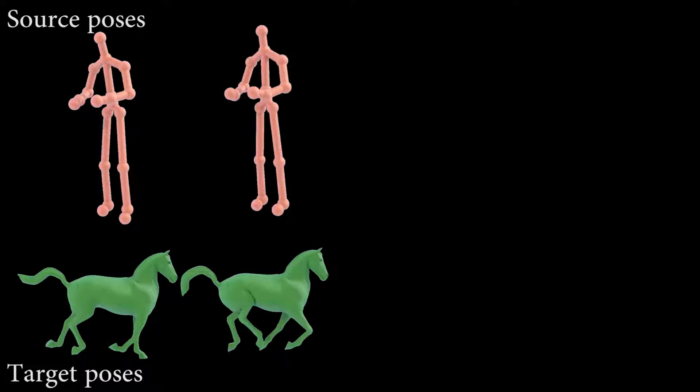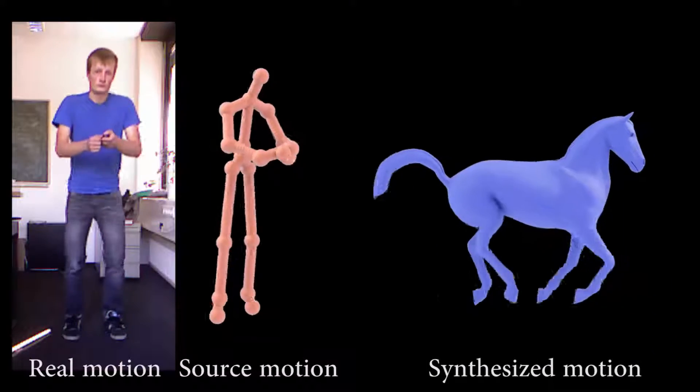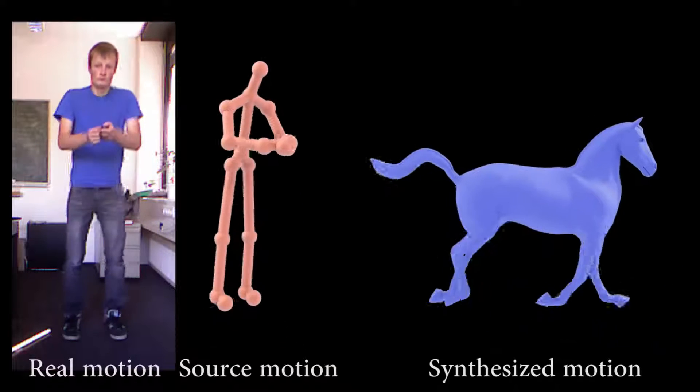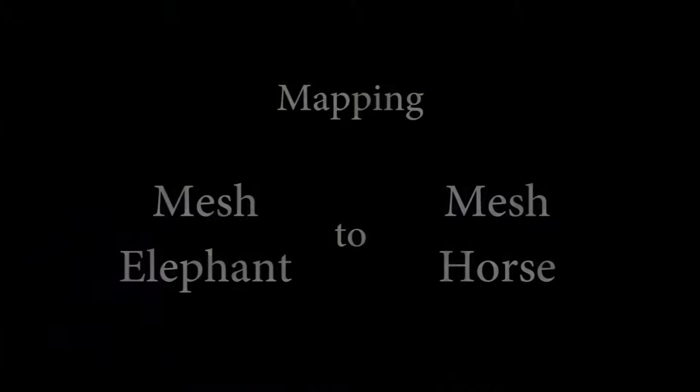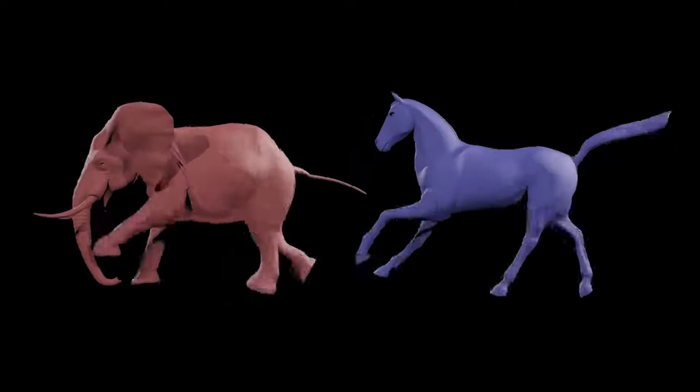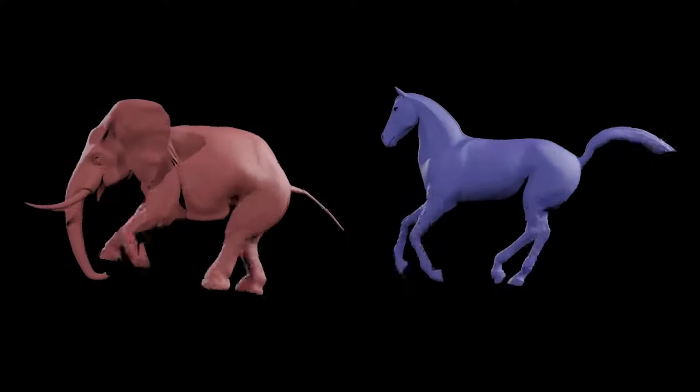With four correspondences, we map a saddle bounce motion captured with Kinect to a mesh horse gallop. The speed of the synthesised motion is linked to the source. A faster bounce means a faster gallop. Next, we show mesh-to-mesh mapping from an elephant to a horse. This sequence also used only four correspondences. The elephant tail error is part of the input sequence.